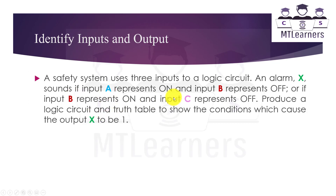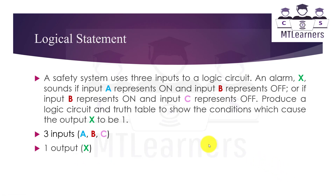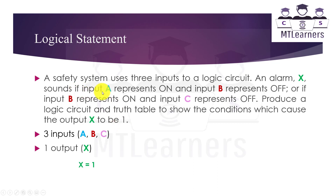We have three inputs A, B, and C and one output that is X. Now we will create a logical statement from this scenario. We will start by writing X equals to 1, which means the output X will be 1 if all these conditions come true.